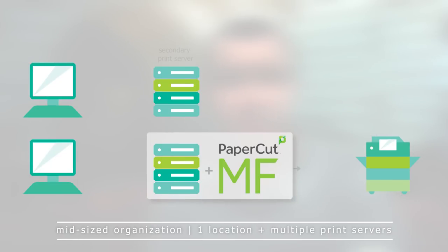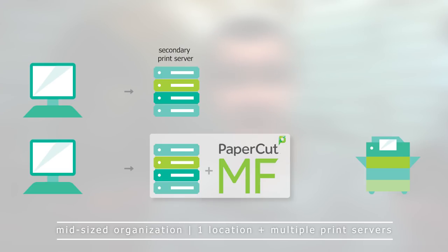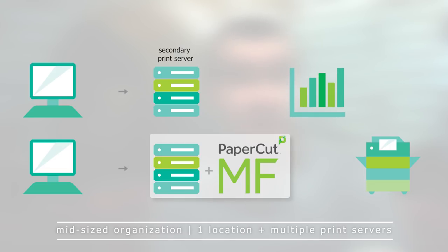So what if you're slightly larger? We've got multiple print servers in this scenario. We've got a PaperCut secondary print server, which can be installed on top of those additional print servers to capture the print jobs sent to those servers. That information is loaded back to the application server, giving you a central location for all reporting. Because we're managing everything from that application server, you can manage all your print queues from a single location.